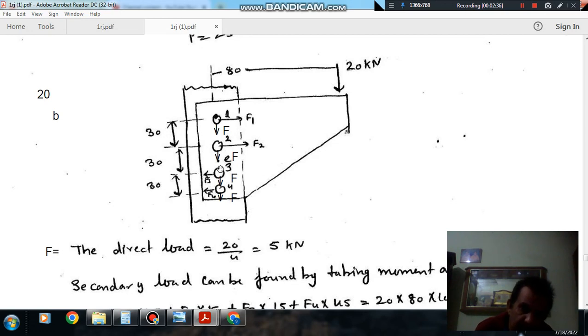The direction of the load F1 will be perpendicular to the line joining the center of the configuration to the center of the rivet. So this is the line joining the center of the configuration and center of rivet, and it is perpendicular to this. Similarly F2 is in this direction, and F3 is in this direction, joining the center of the configuration and center of rivet. Similarly F4 will apply in this direction.